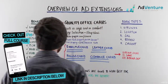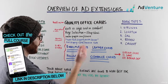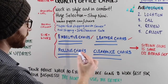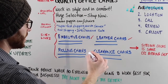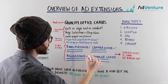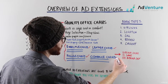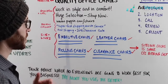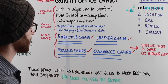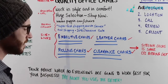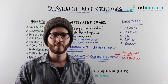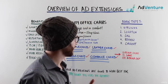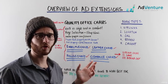We could have a sitelink extension with a headline about executive chairs, one for leather chairs, another sending users to the rolling chairs page, and one for clearance chairs at deep discounts. Each of these sitelinks will have their own description covering features and benefits. So it gives the person searching the ability to find what they're looking for with one click in a more specific way. And you don't have to use sitelink extensions only for subcategories of products — that's just one idea.